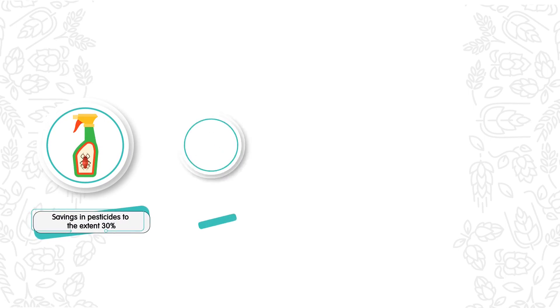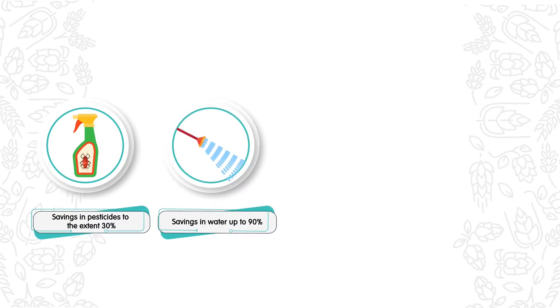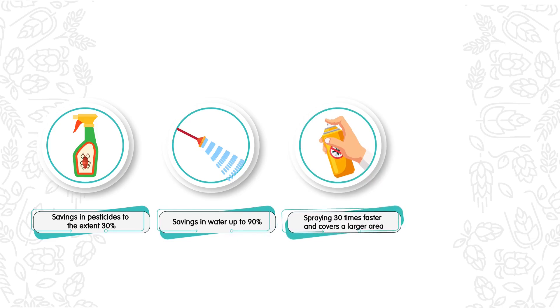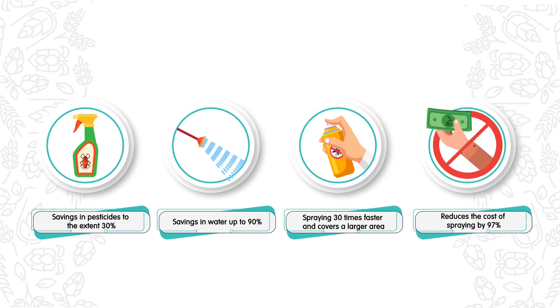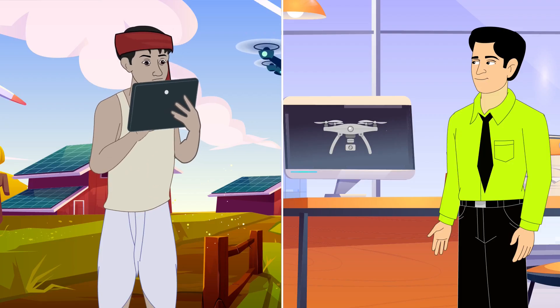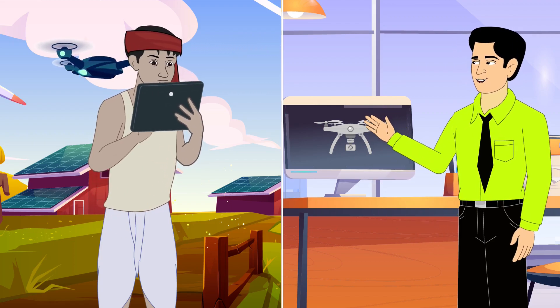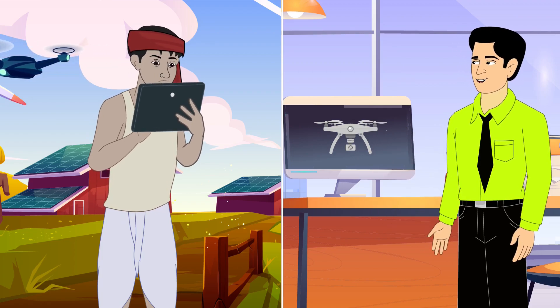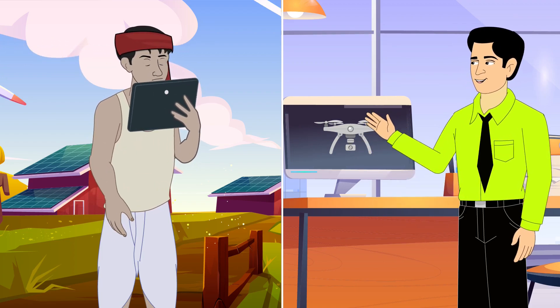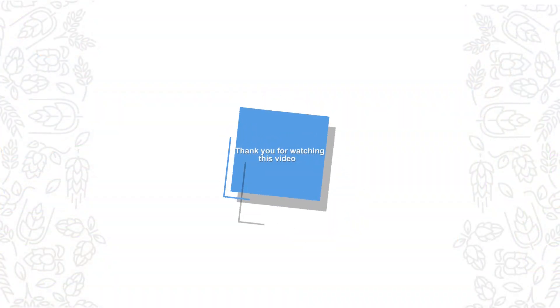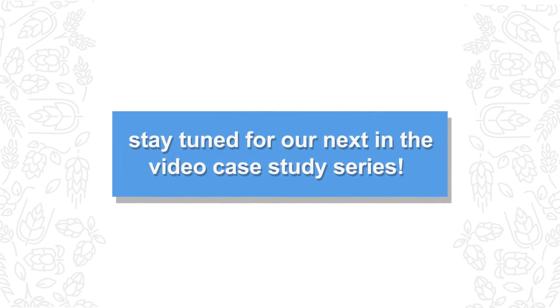Drones offer savings in pesticides of up to 30%, water savings of up to 90%, spray 30 times faster, and cover a larger area than traditional knapsack sprayers, reducing the cost of spraying by 97%. This video case study on crop monitoring by the use of drones has shown many staggering results and strong reasons to adopt this technology. Thank you for watching, and stay tuned for our next video in the case study series.